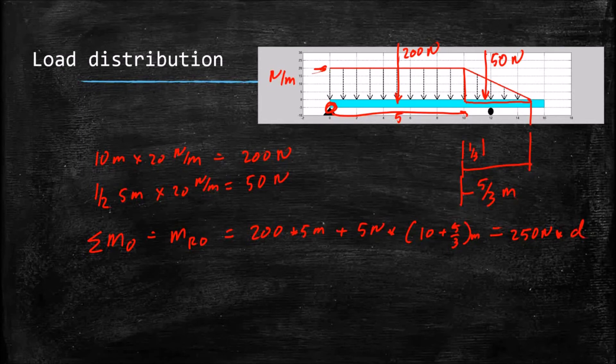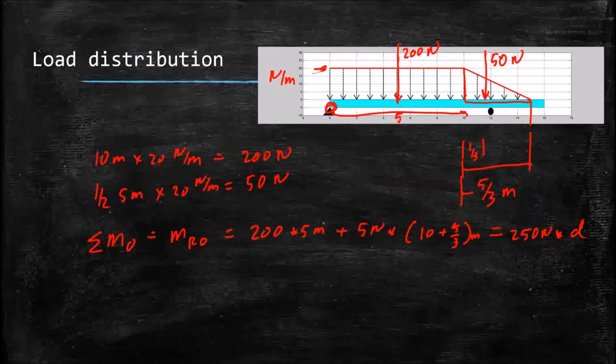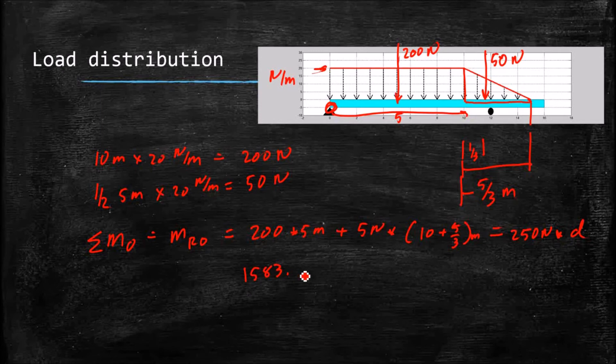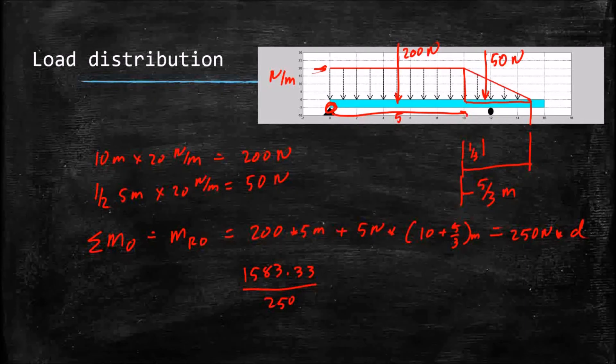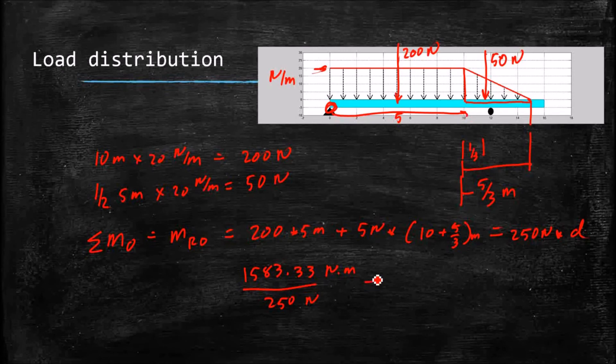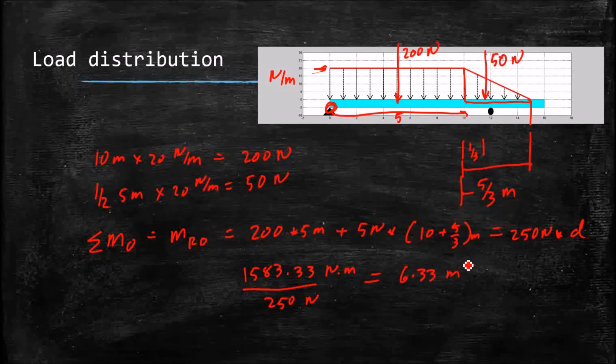And then I can just rearrange that equation a little bit, and I get my total moment is 1583.33 divided by the 250 newtons of our resultant. This is newton meters, this is newtons, and I'm left with meters, and it's 6.33 meters.